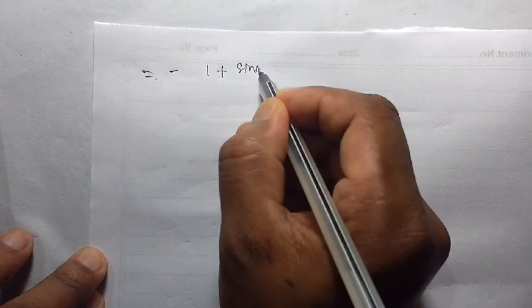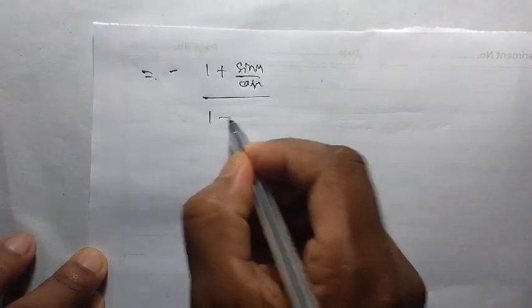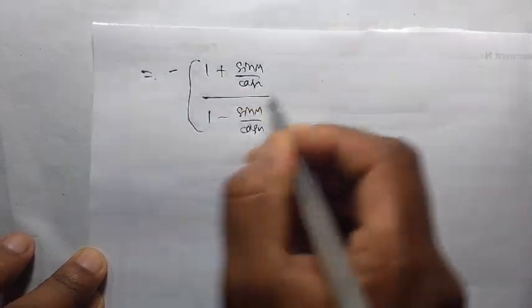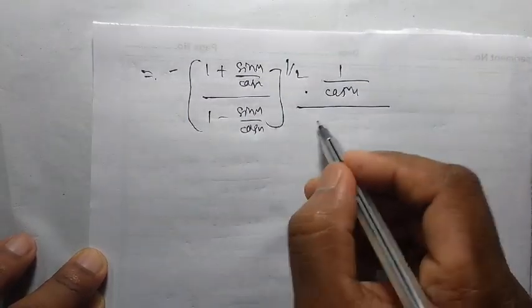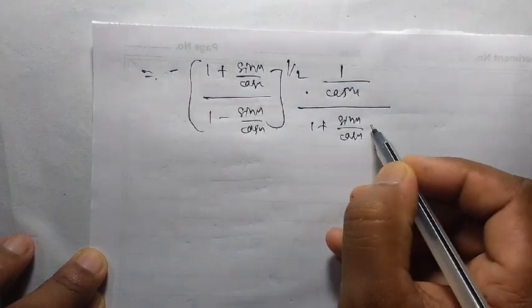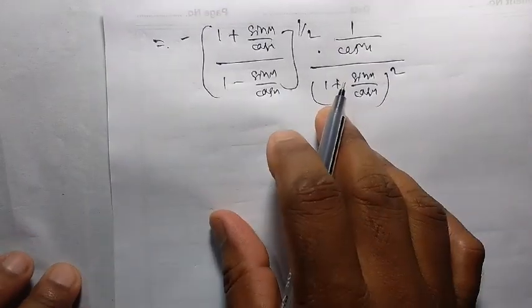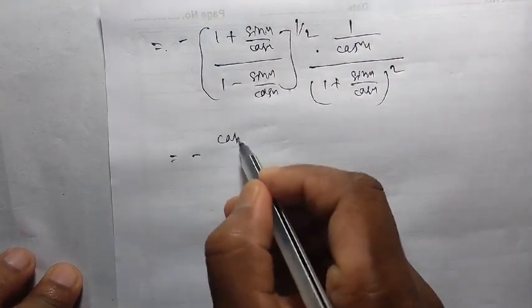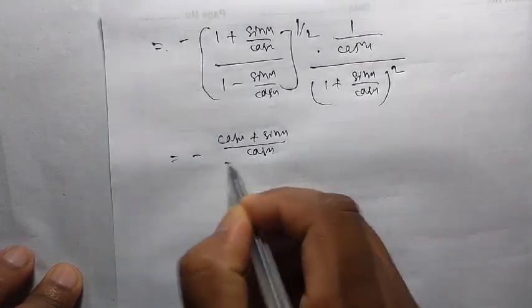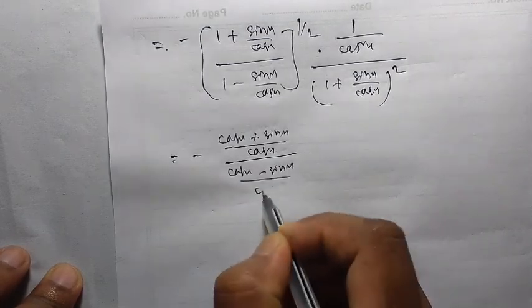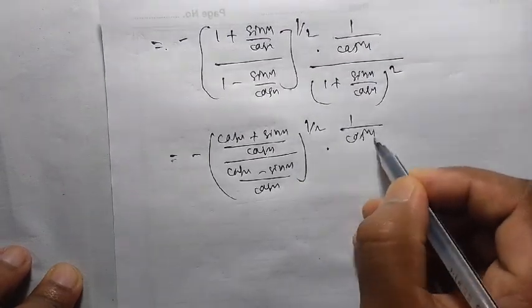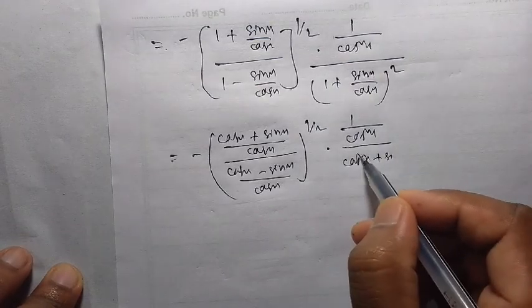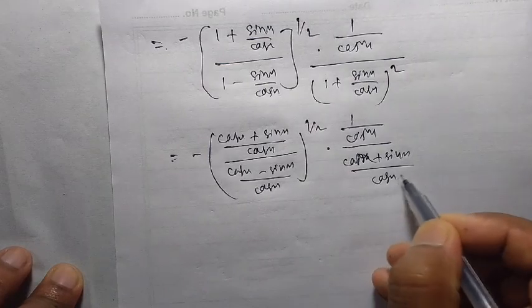This equals minus: I can write sin x by cos x substituted for tan x; so (1 minus sin x by cos x) by (1 plus sin x by cos x), whole to the power half, into sec²x written as 1 by cos²x, divided by (1 plus sin x by cos x)². This becomes minus (cos x plus sin x) by cos x divided by (cos x minus sin x) by cos x, to the power half, times 1 by cos²x, divided by (cos x plus sin x) by cos x whole squared.